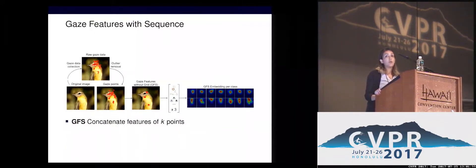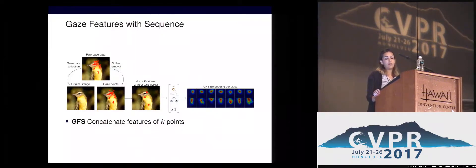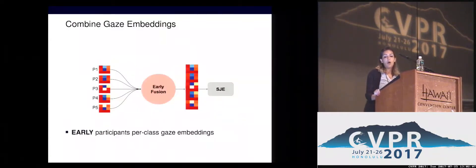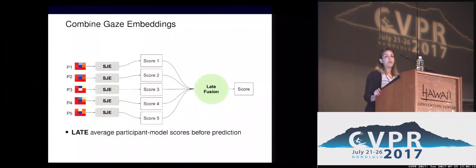Since we collect our data from different participants, we argue that combining them has complementary information. We do that in three ways: by averaging per-class participant embeddings, by concatenating them in an early fusion way, or by learning a separate model from each participant embedding and averaging their classification scores before making the final prediction in a late fusion fashion.